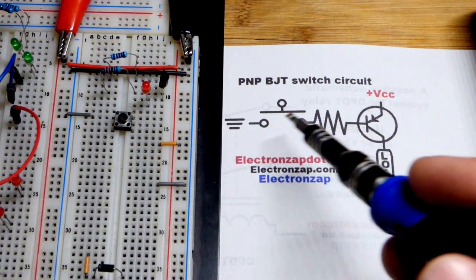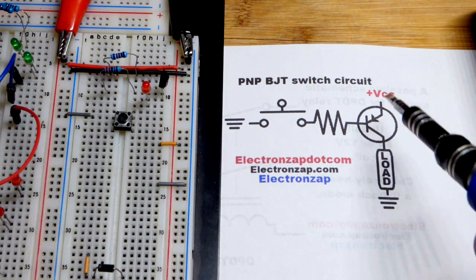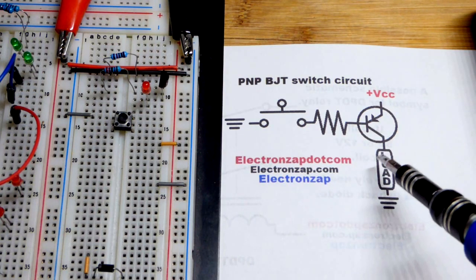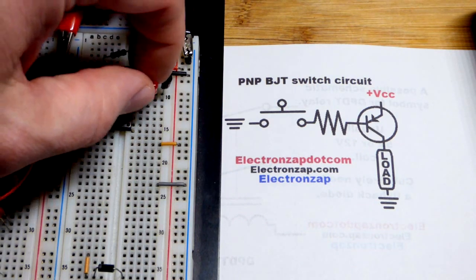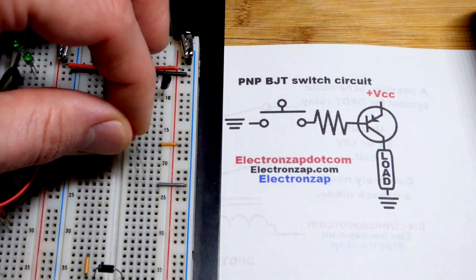Without any current flow along this path here, there's no current flow along here. So the load, in this case our LED, depends on a little bit of base current to get the collector current going.